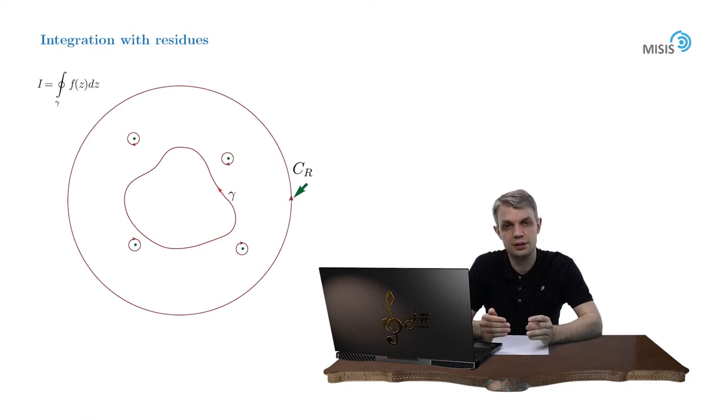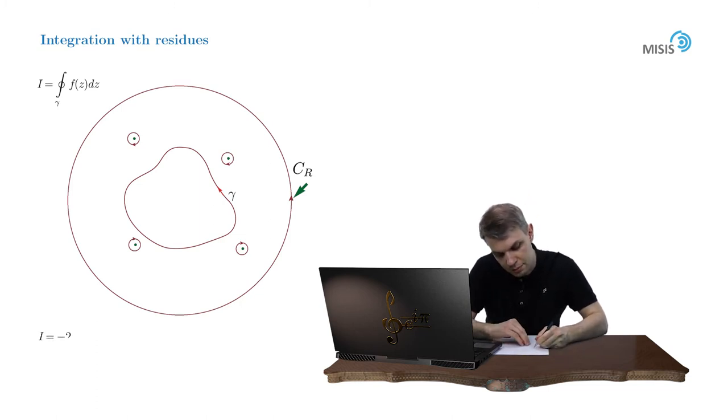But here we have to put an additional minus sign, because unlike in the previous video, these integrals are taken in the clockwise direction. So in the end, we obtain the following interesting result. Our initial integral is equal to minus 2πi times the sum of the residues of our function outside this contour, plus the integral along the infinite circle.